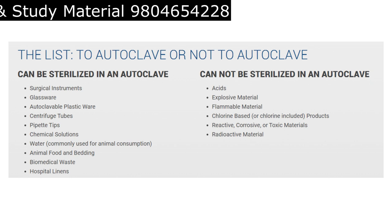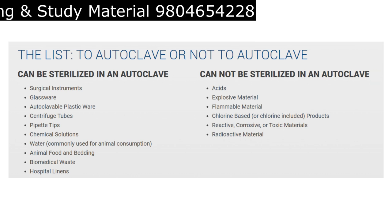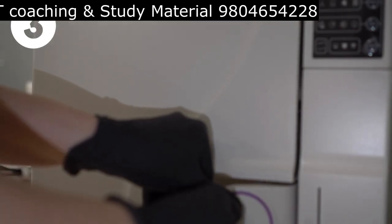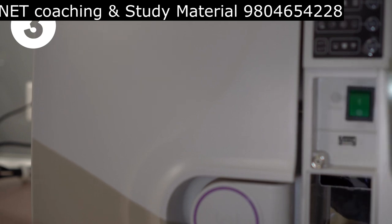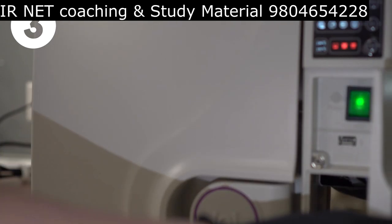There are certain items that you can sterilize in an autoclave and there are certain items you should not put inside the autoclave. Step number three is starting the autoclave. Once you have set the sterilization parameters, it's time to start the autoclave.